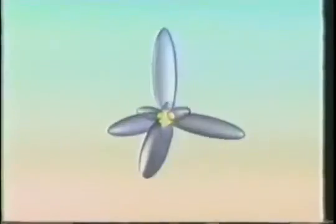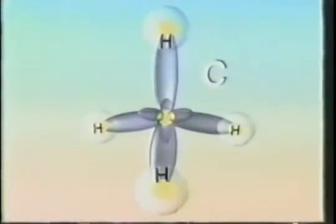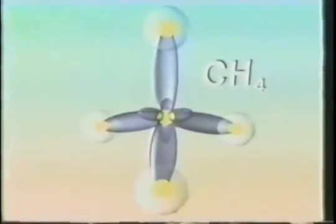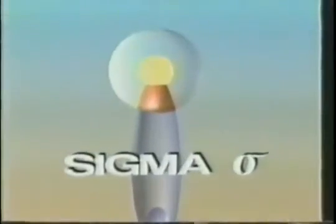In program two, we examine the SP3 hybridization of carbon with carbon's orbitals and electrons. In the case of methane, the hydrogen orbitals overlap with carbon's hybridized orbitals to form four covalent bonds. These bonds are called sigma bonds, and sigma bonds are relatively stable arrangements.